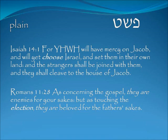The plain meaning (peshat) of being chosen refers to the forefathers. Isaiah 14:1 — 'For Yahweh will have mercy on Jacob and will yet choose Israel and set them in their own land, and the strangers shall be joined with them and they shall cleave to the house of Jacob.' Romans 11:28 — 'As concerning the gospel they are enemies for your sakes, but as touching the election they are beloved for the fathers' sakes.' Yahweh has always had mercy on the people he has chosen down through the generations.